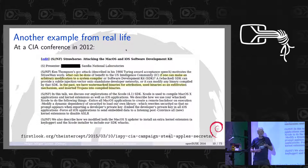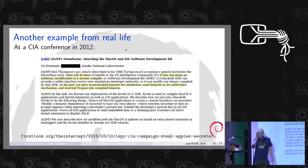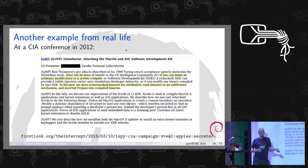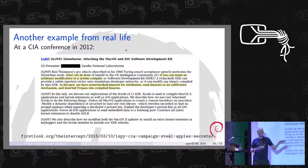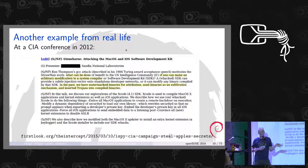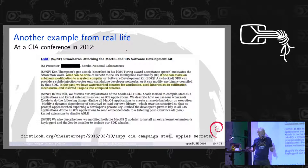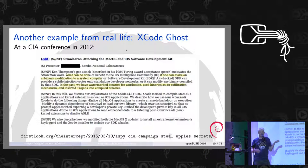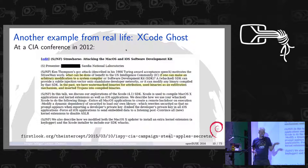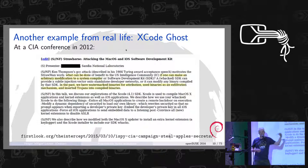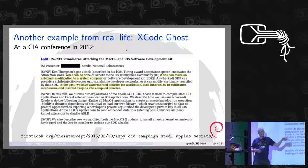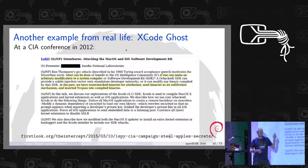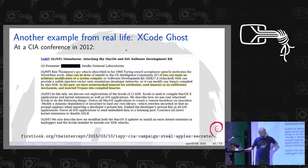Another example: from the Snowden documents, the CIA had a design for compromising an SDK that developers download, in order to attack users. The CIA described this in a white paper. And this actually happened — the XcodeGhost incident, where someone put the iOS SDK on faster servers in China for better download speeds. Developers used that SDK and 20 million applications were trojaned. This is the problem we are protecting against.